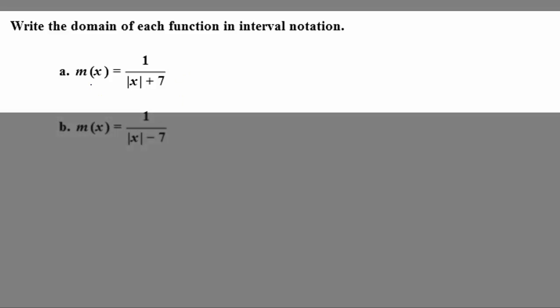Looking at part A, finding a domain means finding all of the x values that would make sense to plug in, that wouldn't cause a problem. Examples of problems would include things like the square root of a negative number, or perhaps dividing by zero.